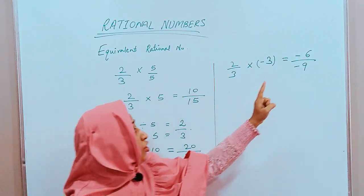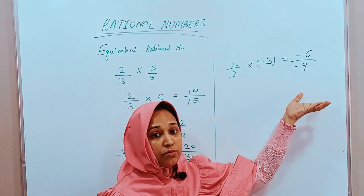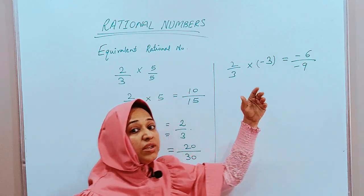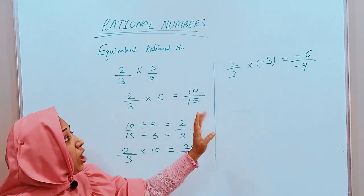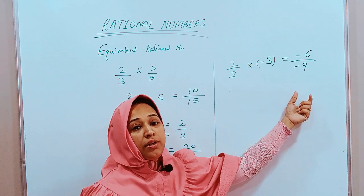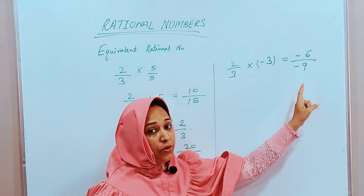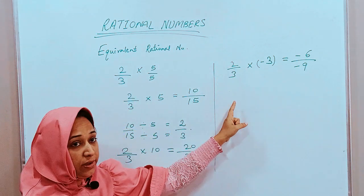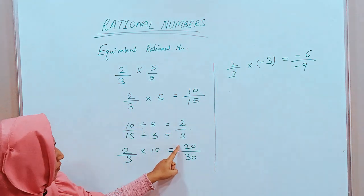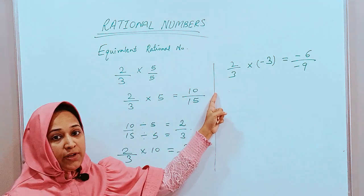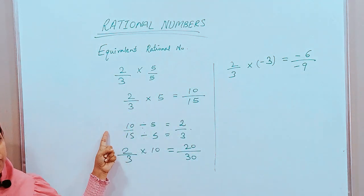Now, if we want to change minus 6 by minus 9 to the standard form, we can say 6 upon 9, and changing it to standard form of rational number also says that it should be in the simplest form. It means the standard form of minus 6 upon minus 9 is 2 by 3. The standard form of 20 by 30 is also 2 by 3. The standard form of 10 by 15 is also 2 by 3.